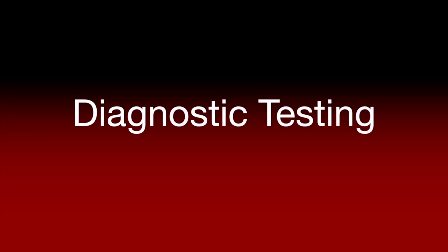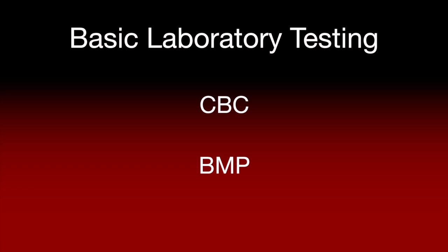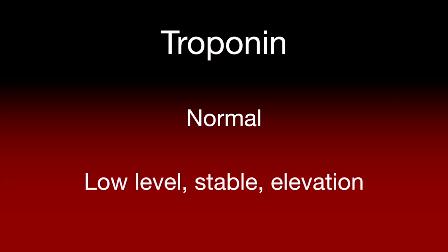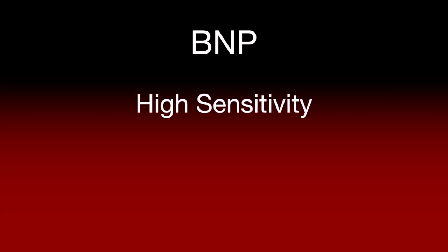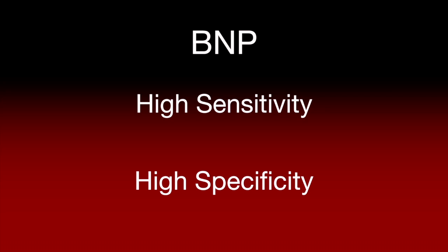We will now discuss the utility of laboratory and diagnostic testing for a patient with suspected congestive heart failure. Basic laboratory work should be done to assess hematologic status, electrolyte levels, and renal function. However, in basic CBC and BMP testing, there are no abnormalities that are pathognomonic for congestive heart failure. Hyponatremia may be seen with volume overload resulting in hypervolemic hyponatremia. A troponin measurement is likely to be normal or demonstrate very low-level elevation that is stable in serial measurements unless there is an active acute coronary event or active myocarditis. A serum BNP measurement has become the test of choice for diagnosing heart failure. Elevated BNP levels have a high sensitivity and specificity for a diagnosis of heart failure, especially when combined with additional history, exam, and other laboratory and diagnostic testing.